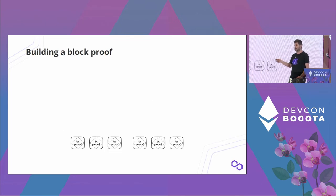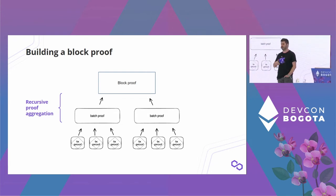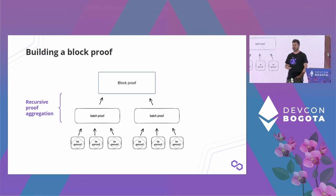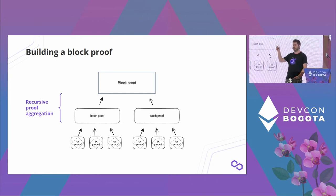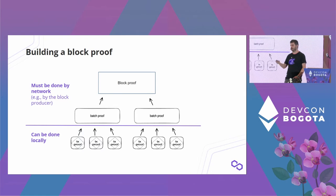Once we have a bunch of transaction proofs, we recursively aggregate them into batches, and those batches recursively get aggregated into block proofs, which are further aggregated into epoch proofs — and that's what gets submitted to Ethereum. All of this recursive aggregation can also be done in parallel; all transactions and all batches can be proved in parallel. There is also an interesting property that we can prove transactions locally, while the aggregation steps need to be done by the network or delegated by the block producer.